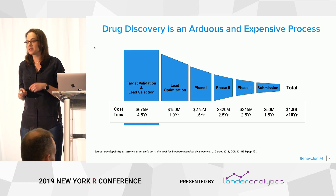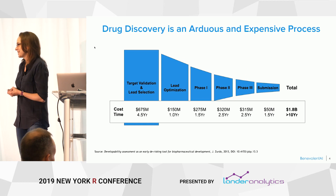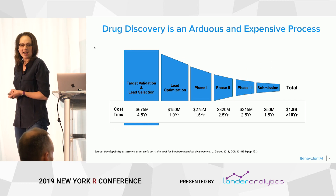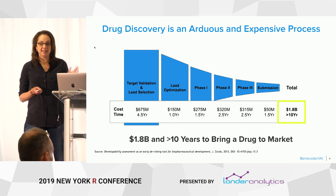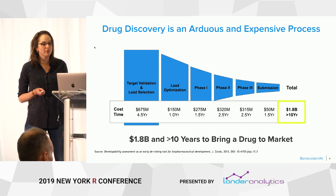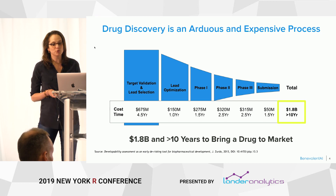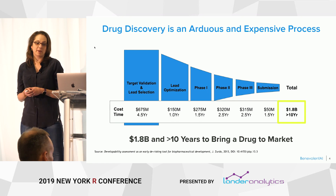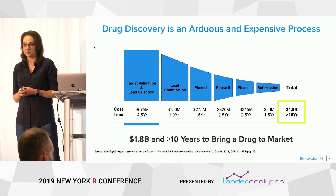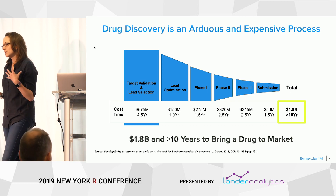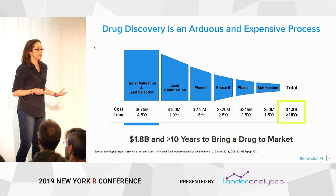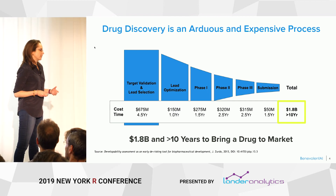If that sounds like a long and arduous process, you'd be correct. There are estimates that it can take between $1.8 billion — and that's actually a low estimate — to get all the way from the early stages of drug discovery through the three phases of clinical trials and to submission, and it can also take in excess of 10 years. The higher estimates are about $2.5 billion and about 15 years. So our goal at Benevolent AI is to accelerate this process with machine learning.